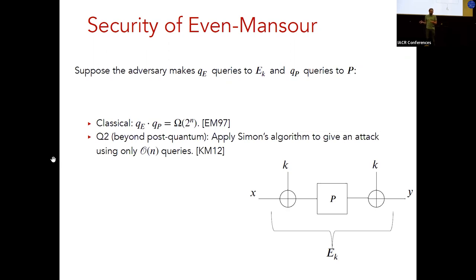As we've seen a couple of times already, and as I've mentioned before, in the Q2 model, in this quantum access model, there is a complete break of the cipher. So that's the Simon's algorithm-based attack that breaks it using order of N queries. Now the question is, in Q1, right, there are attacks known, as we have seen, but there's no, currently no, or before our work, there was no proof of security in the Q1 model.